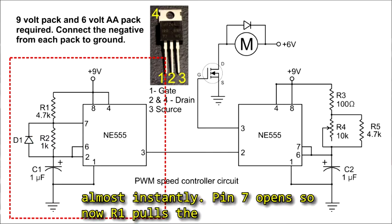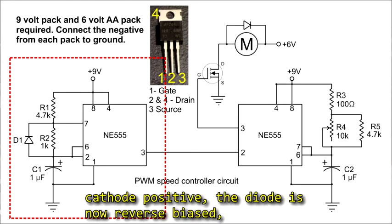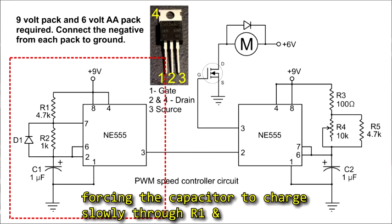Pin 7 opens, so now R1 pulls the cathode positive, the diode is now reverse biased, forcing the capacitor to charge slowly through R1 and R2.